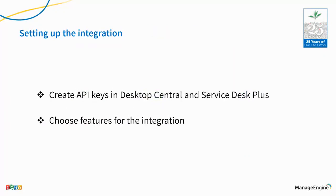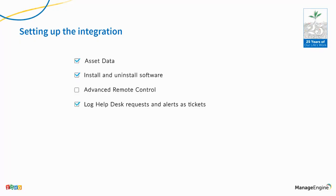To sum it up: you create API keys in both Desktop Central and Service Desk Plus, choose which features you want, and the integrations are set up. You have different features you can select — it could be asset data only, or remote control, based on what you need.